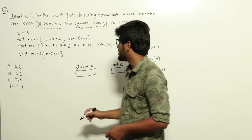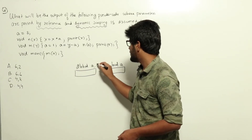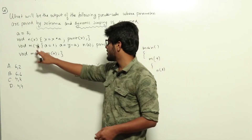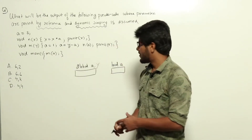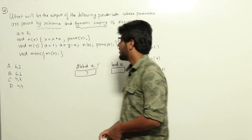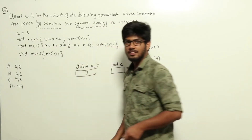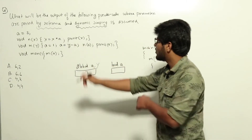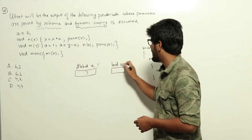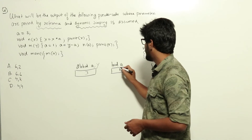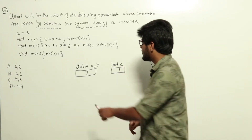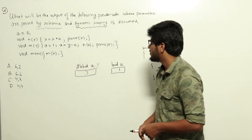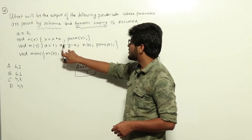Since it is passed by reference, the address of global a is being passed to y, so y and global a refer to the same variable. The value of global a is 3. Inside function m, we are doing a equal to 1 — this declares a new local variable. So now we have two a's: global a with value 3 and local a with value 1. y and global a are the same thing.